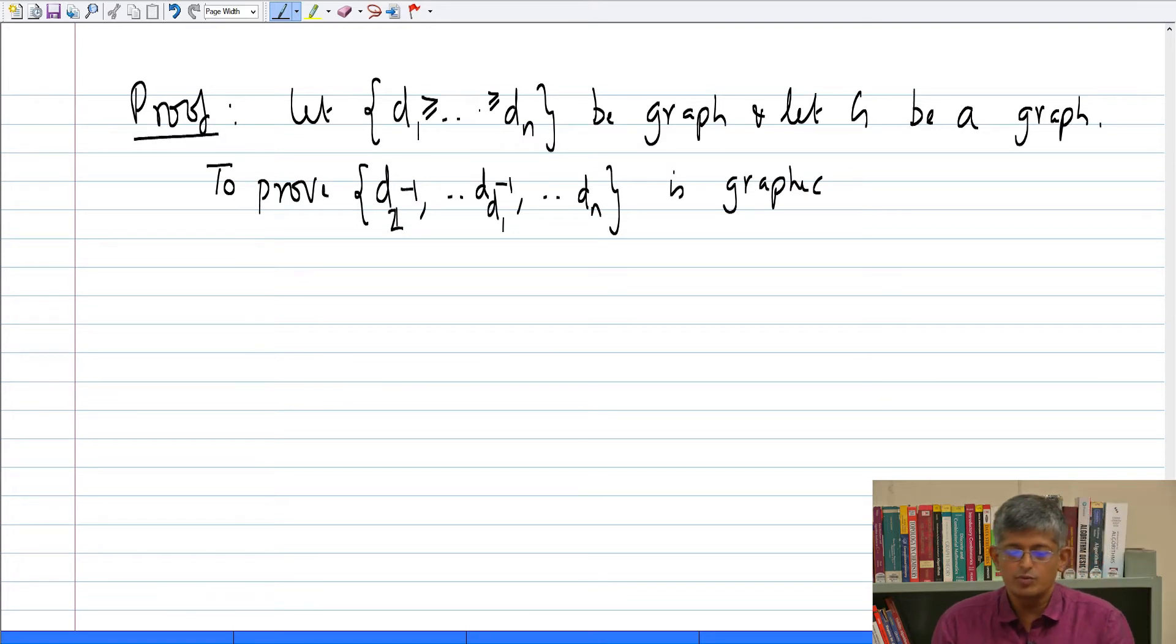What is the claim that I am going to prove? I am going to prove the forward direction of my claim. Remember, my claim had if and only if, which means that it is a logical statement which says that if something is true, then something is true. If P is true, then Q is true. Because it is if and only if, it shows that if Q is true, then P is also true. So, let us prove one direction. If d1, d2 to dn is graphic, then I am going to claim that this sequence is also graphic, which means you should be able to give me a graph. From the graph, I will construct. I will show you how to construct from this graph a G prime, which will have exactly this degree sequence.